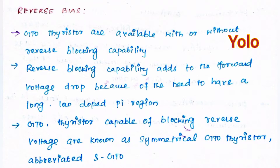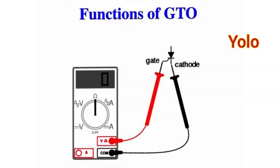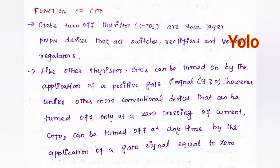Reverse blocking capability adds to the forward voltage drop because of the need to have a long, low-doped p-region. GTO thyristors capable of blocking reverse voltage are known as Symmetrical GTO thyristors, abbreviated SGTO. GTOs are four-layer PNPN devices that act as rectifiers and voltage regulators.